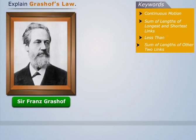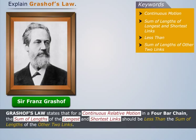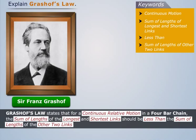It states that for a continuous relative motion in a four-bar chain, the sum of lengths of the longest and shortest links should be less than the sum of lengths of the other two links.